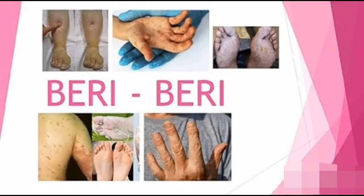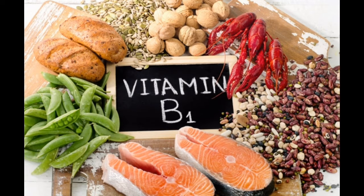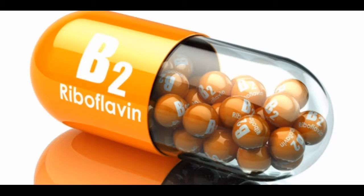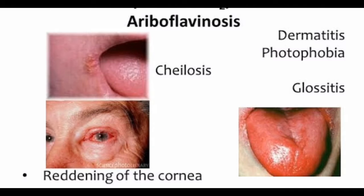Vitamin B1: constituent — thiamine. Deficiency disease — beriberi. Sources — cool greens, peas, meat and fish, soya beans, cereals, and pasta. Vitamin B2: constituent — riboflavin. Deficiency disease — ariboflavinosis.